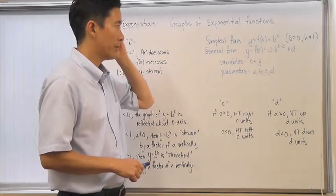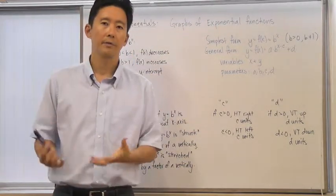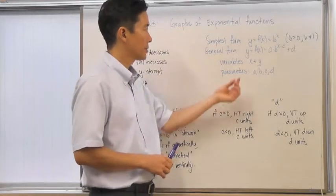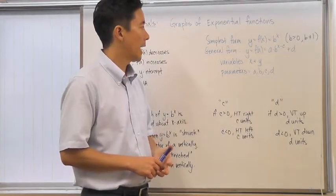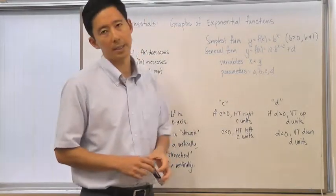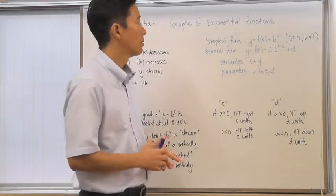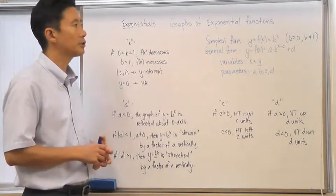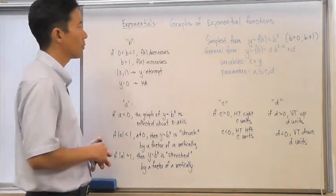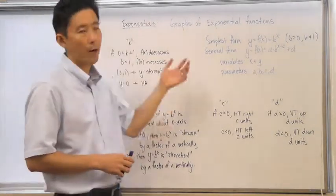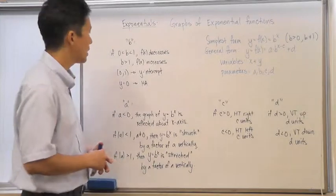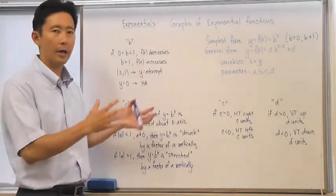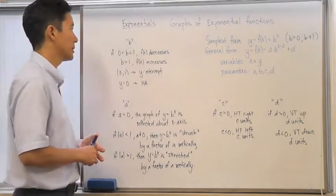With the general form, we need to establish which ones are the variables and which ones are the parameters. The variables are x and y, and the parameters are a, b, c, and d. The parameters define the exponential function, and we want to be able to graph them. So let's go through each one of these parameters and find out exactly how each parameter affects the exponential function itself.